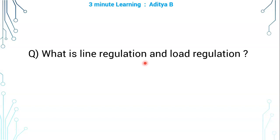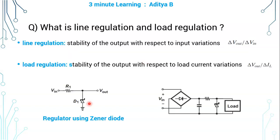What is line regulation and load regulation? The stability of the output with respect to the input variations is called line regulation. In other words, even though the input voltage changes, output voltage should not change. It should remain almost constant in a regulator circuit, and this is called line regulation.